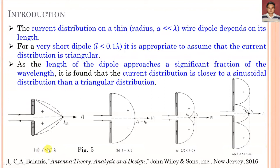As seen in figure 5a, when L is less than lambda, specifically L equal to 0.1 lambda, the current distribution is triangular. As the length of the dipole increases to a significant fraction of the wavelength, the current distribution is closer to sinusoidal than triangular, as shown in figure 5b for L equal to lambda by 2. Between L equal to lambda by 2 and lambda, we get a sinusoidal-type response. We first analyze the radiated field by the finite length dipole, then calculate the radiated field for L equal to lambda by 2.